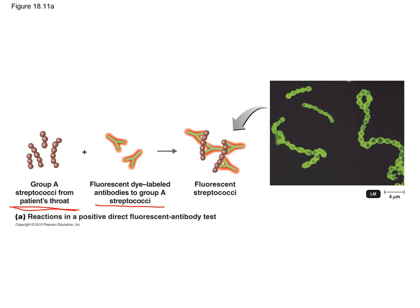You add the fluorescent antibodies to your smear of streptococcus. The antibodies would have the fluorescent molecule on the constant region, not the whole antibody glowing. If this is group A streptococcus, the antibodies will bind to the bacteria, and when you look at it under the microscope, you will see that the bacteria fluoresce. That is a positive identification for group A strep. So one application of fluorescent antibodies is direct staining.